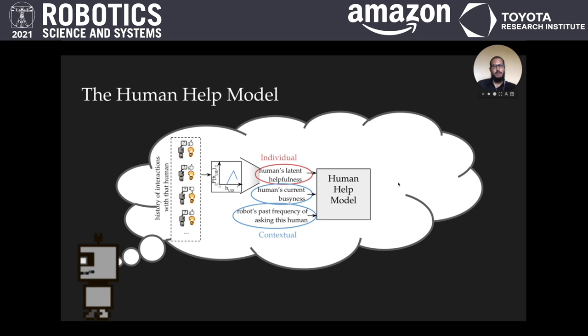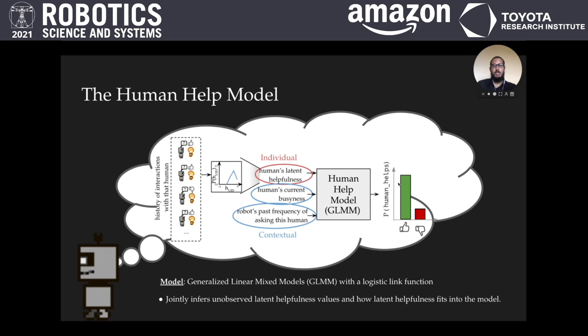Latent helpfulness is inferred from the history of past interactions with that person. The model then outputs the predicted probability of that human helping the robot. We use generalized linear mixed models with a logistic link function. GLMM enables us to account for both the observed contextual factors, but also the unobserved individual factor of latent helpfulness.